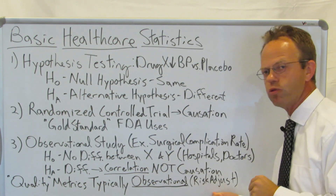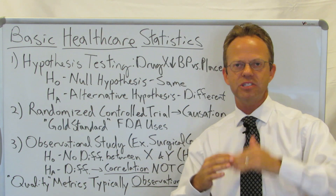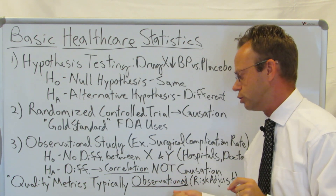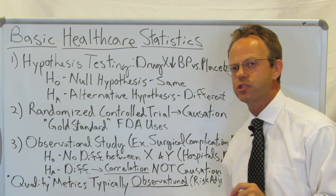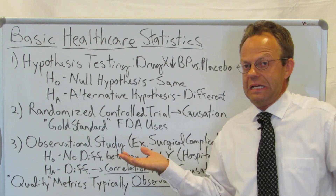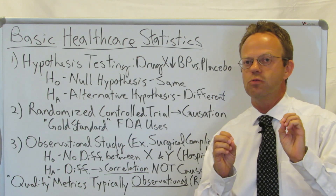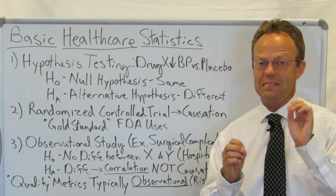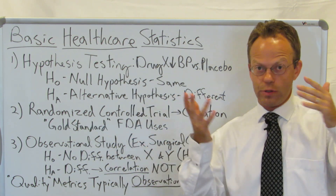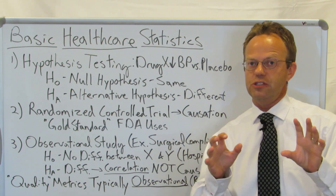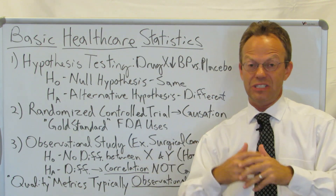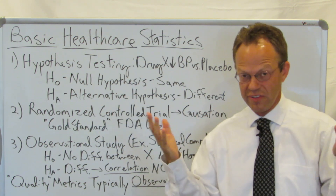What they do is try to do risk adjustment — to adjust for that something else. A doctor might say, 'My patients are sicker, therefore I have a higher complication rate.' But risk adjustment is not a perfect solution for turning an observational study into a randomized controlled trial and proving causation. For example, an attending physician at Johns Hopkins who is one of the world's foremost experts on aplastic anemia — where your bone marrow essentially quits making red blood cells, leading to death — may have outcomes that look worse than the national average.